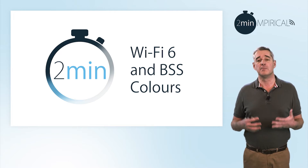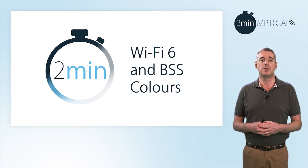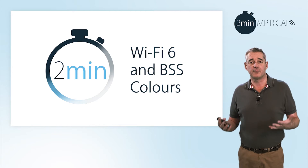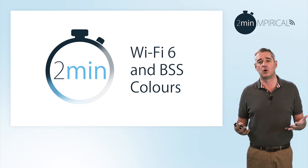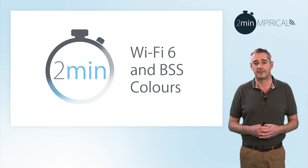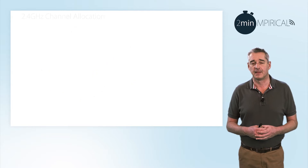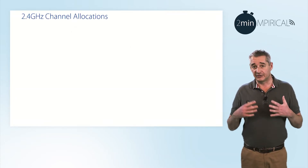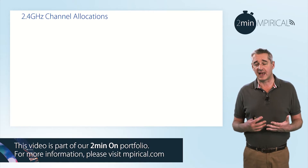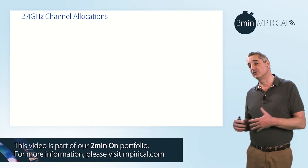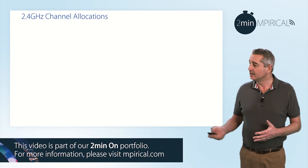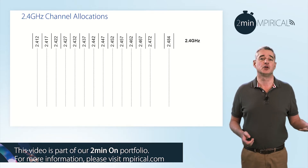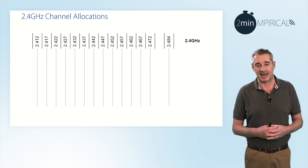This is particularly relevant where we find multiple access points operating in close proximity — be that in an office complex, a shopping mall, a sports stadium, etc. Before we look specifically at what we mean by BSS Colour, it's important to first recap on the different channel allocations. Here we're going to initially focus on the 2.4 GHz ISM band.